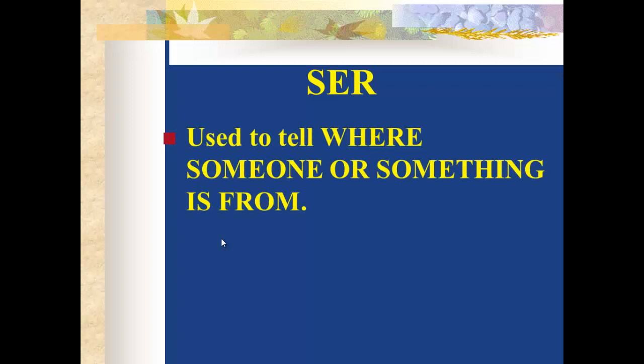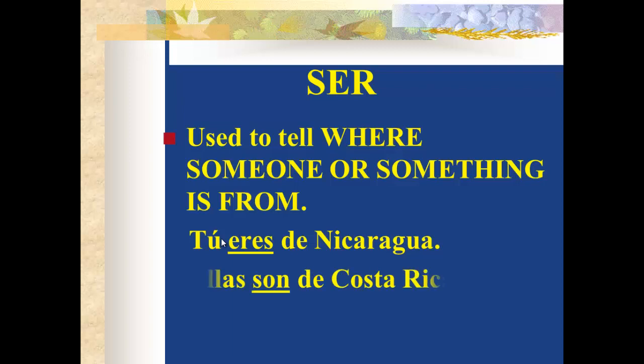You use ser also to tell where someone or something is from. Remember when we had our quiz and it said de dónde eres — where are you from? You answer back with soy de Ecuador, or soy de México. So 'de' means from. For example, tú eres de Nicaragua — you are from Nicaragua. Ellas son de Costa Rica — the girls, or they, are from Costa Rica.